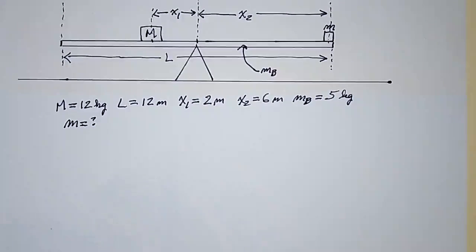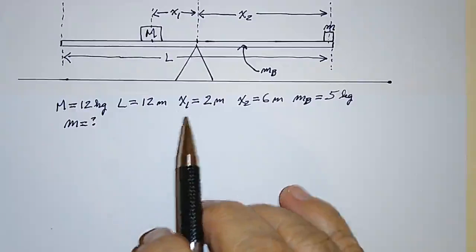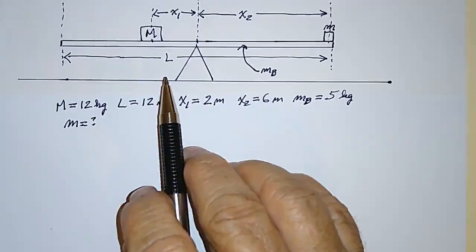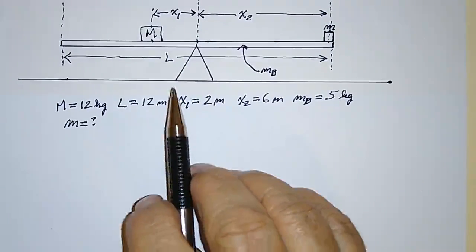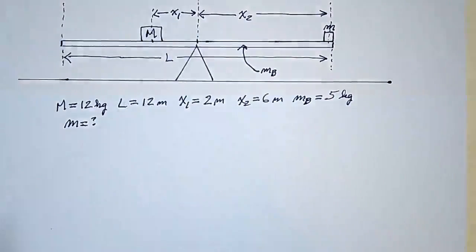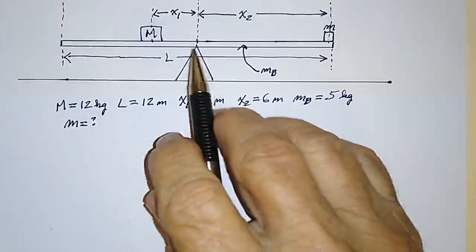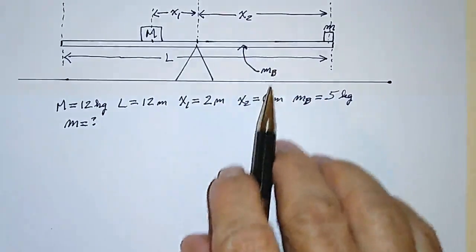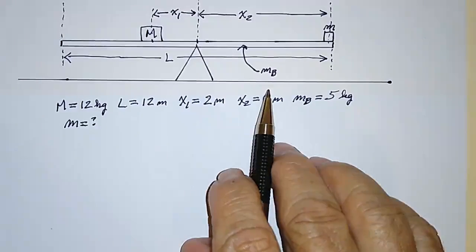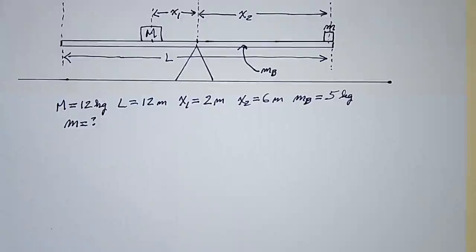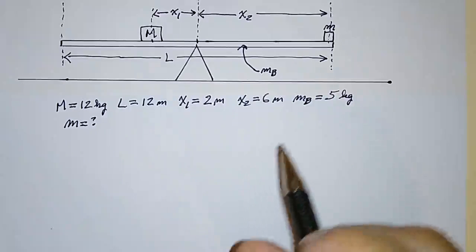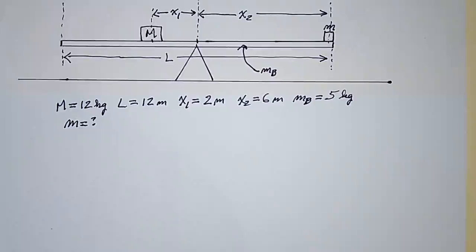There are a couple of different ways to approach this problem. First, we say that it's in equilibrium, which means all of the forces acting downward are equal to all of the forces acting upward, and all of the torques that tend to make this object rotate clockwise are equal to all of the torques that tend to make it rotate in the opposite direction.